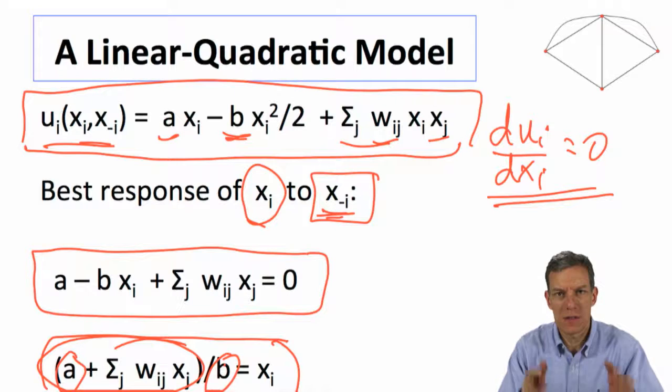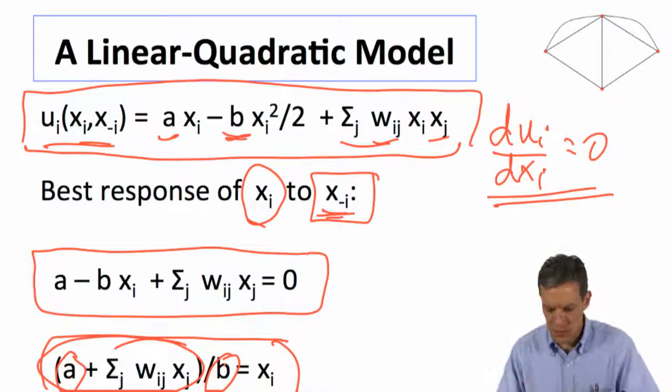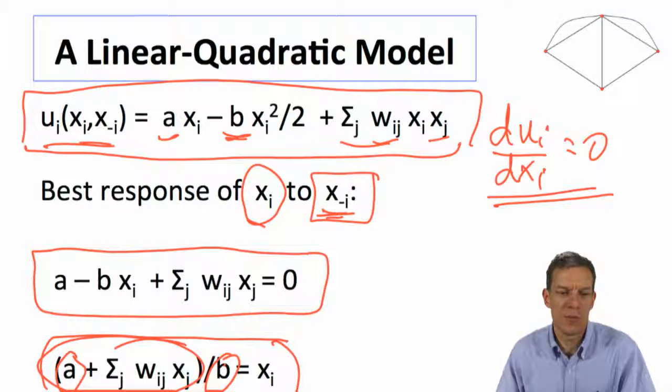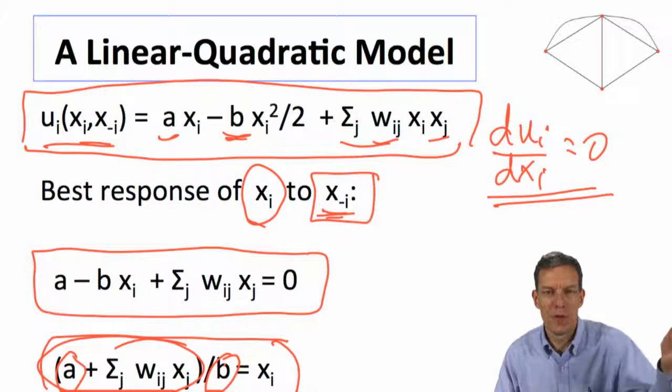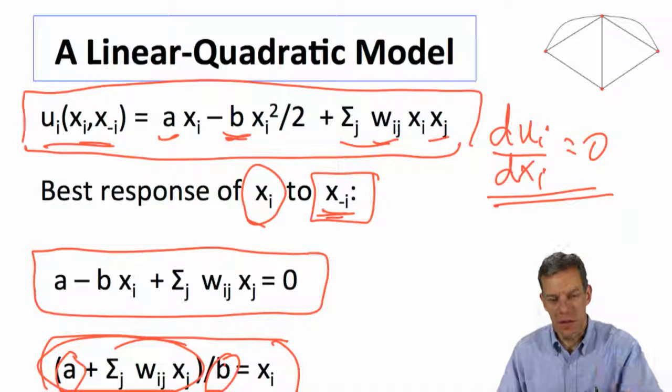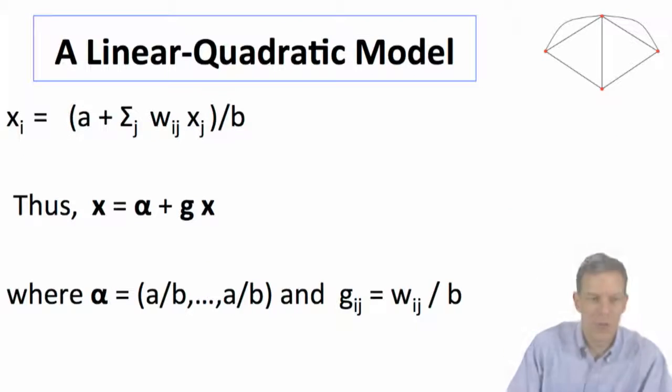Okay, so we've got a best response, what i should do in response to what everybody else is. And then an equilibrium is just going to be solving this set of equations simultaneously, so everybody wants to be taking the action in response to everybody else.